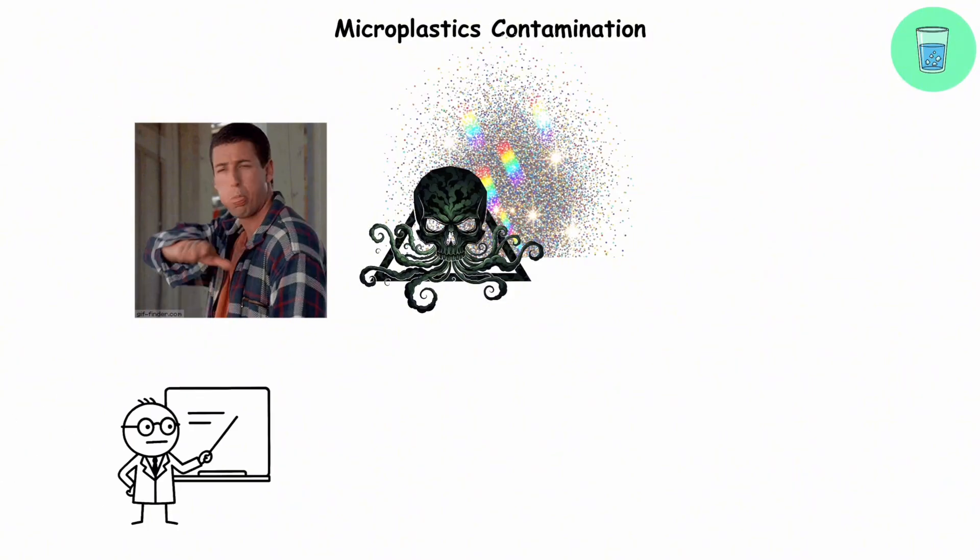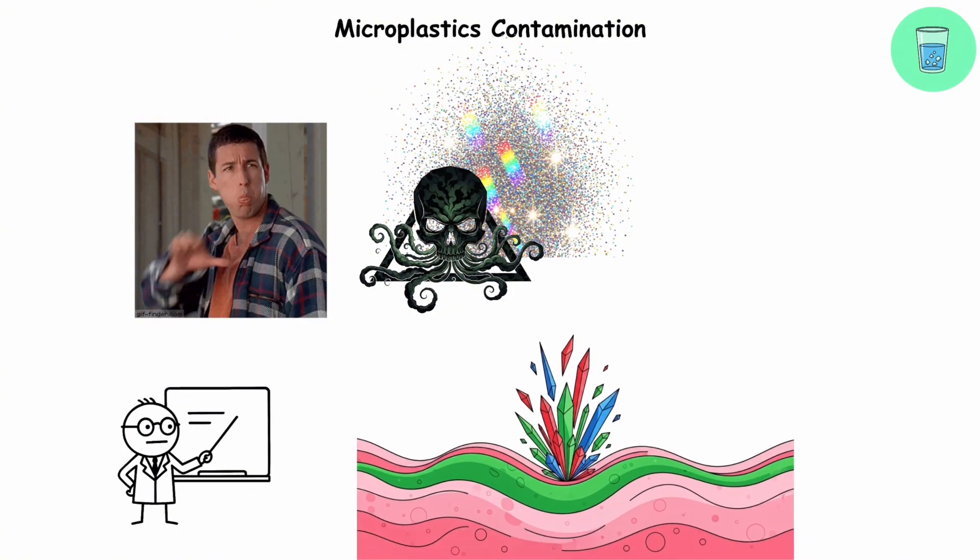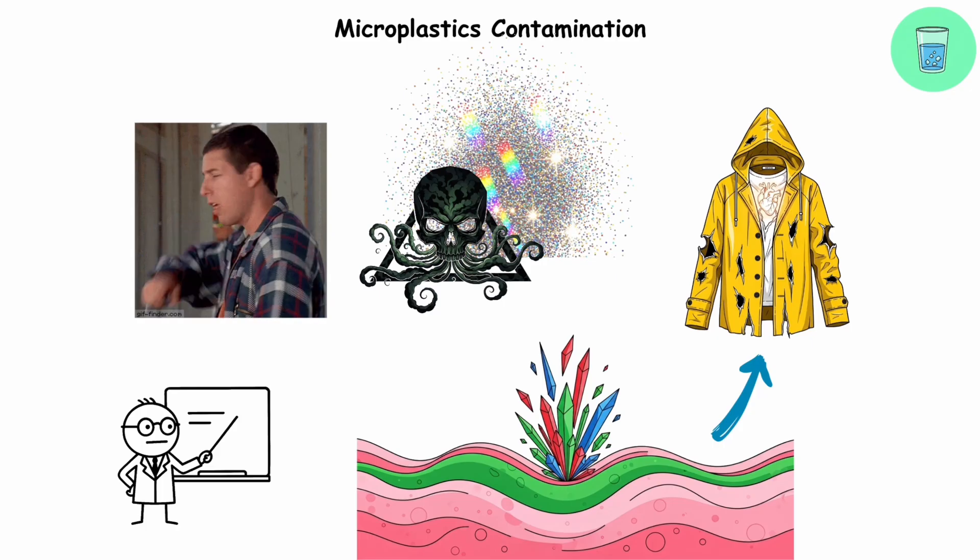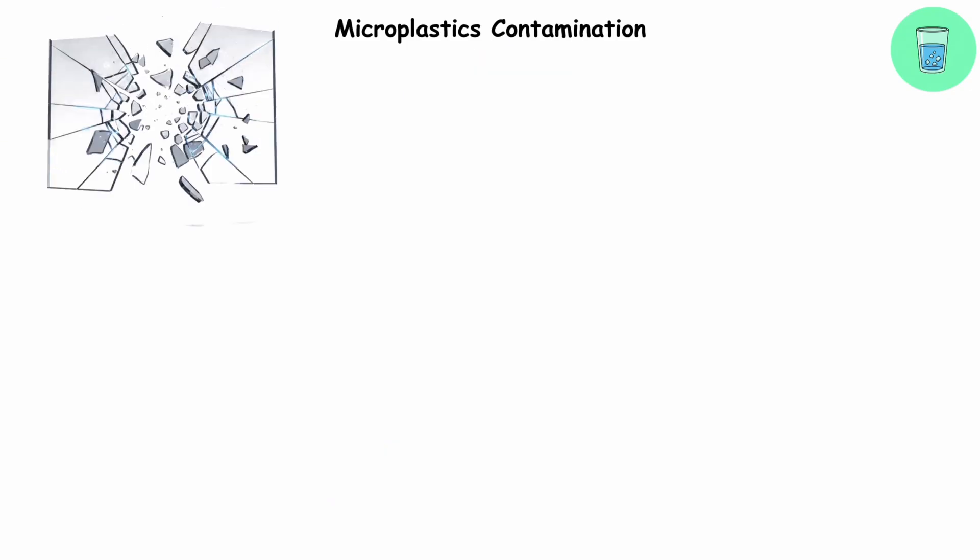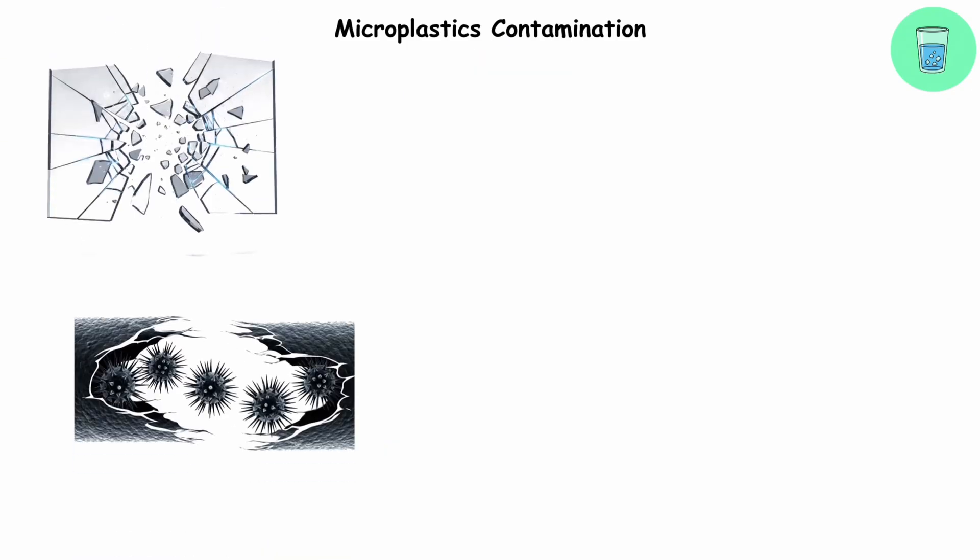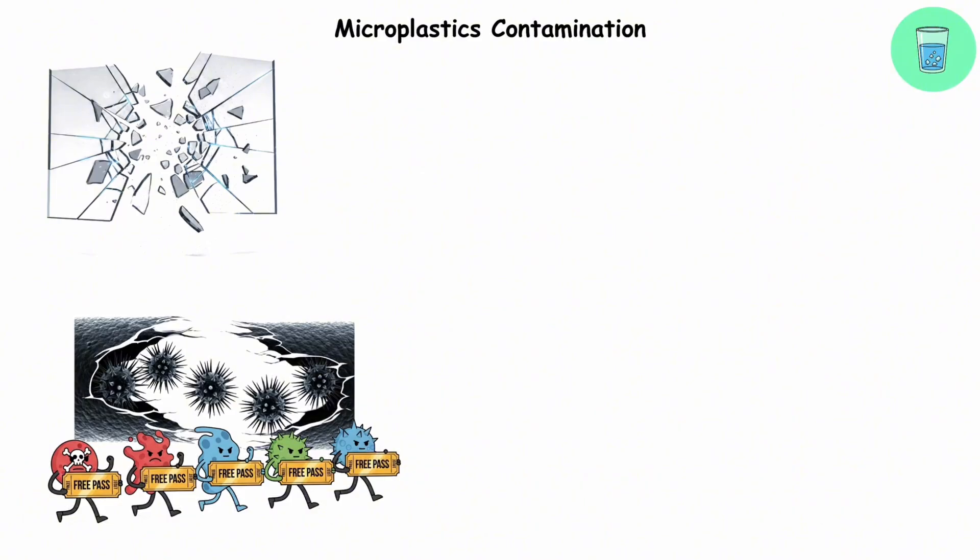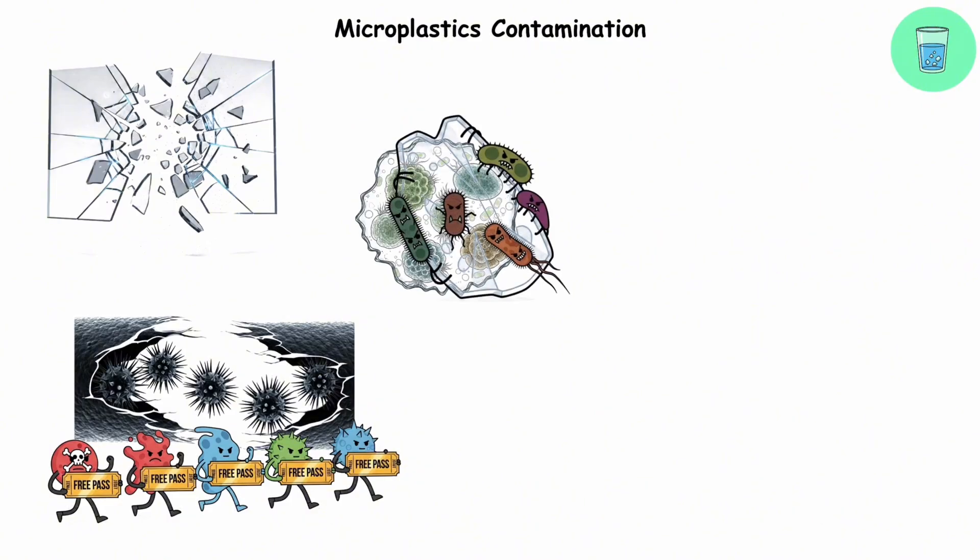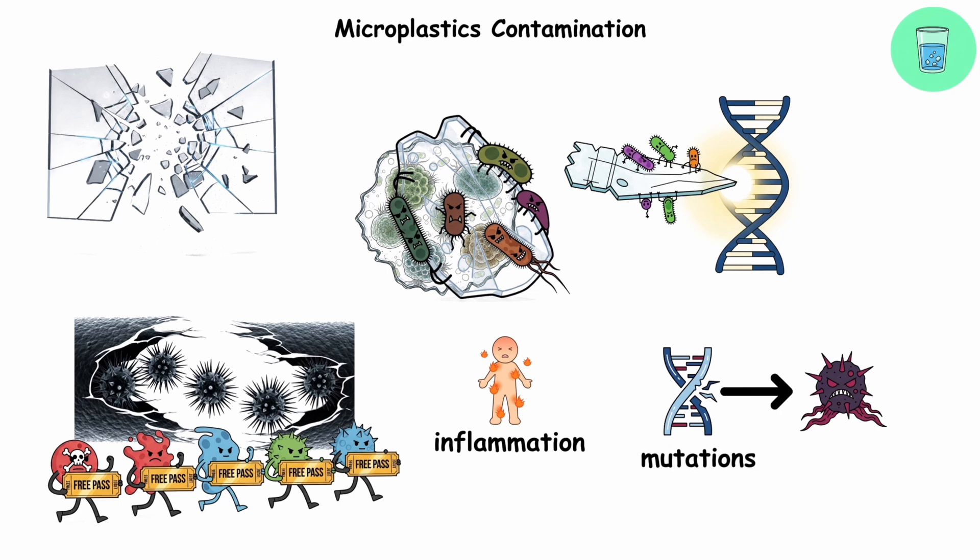Here's the science. These tiny particles can mess with your gut's protective mucus layer. Think of it like tearing holes in your biological raincoat. Once that barrier is down, harmful toxins and forever chemicals get a free pass into your system. Microplastics can even carry bacteria that play dirty with your DNA, potentially triggering inflammation and mutations that set the stage for cancer.